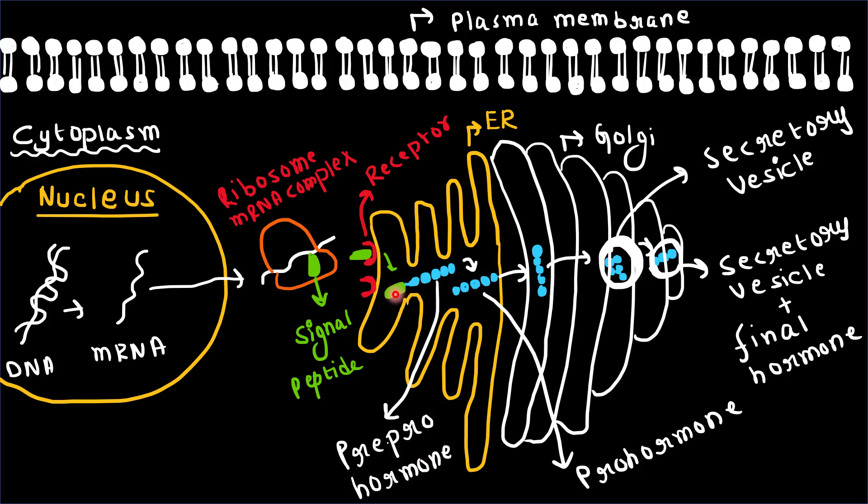The signal peptide is removed in the endoplasmic reticulum. Now, the pre-prohormone becomes a prohormone.